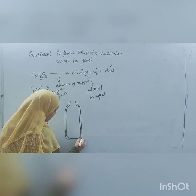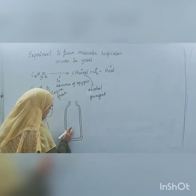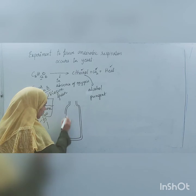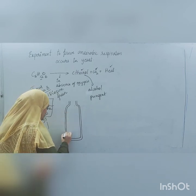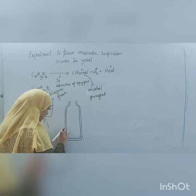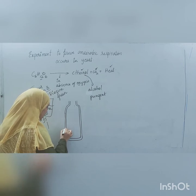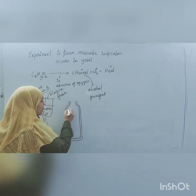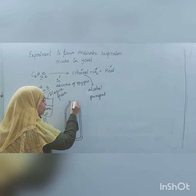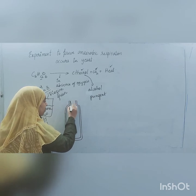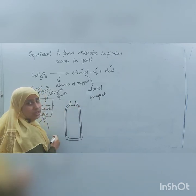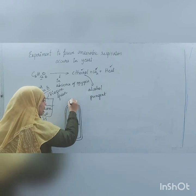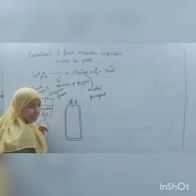The oxygen-free glucose solution is then poured into a thermos flask. We use a thermos flask because the heat generated by this experiment should not be lost to the surroundings. If you use a beaker, heat may escape. The thermos flask is closed with a rubber cork that has two holes.